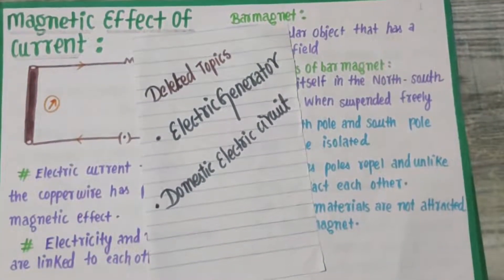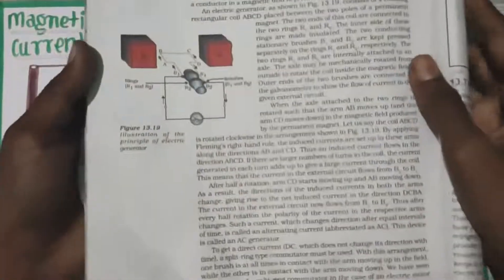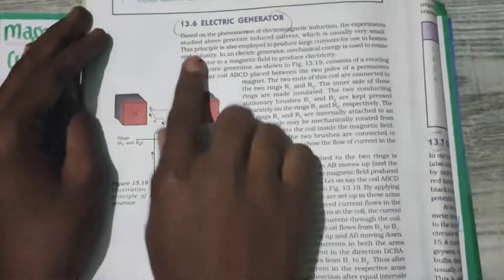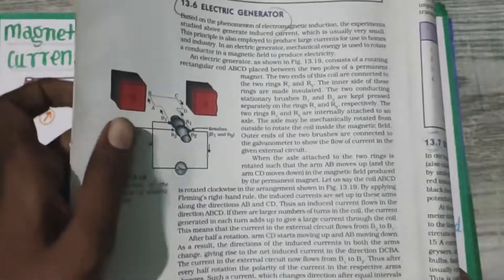So, here is page number 236. You can see this page is not there for your exam. This page will not be there for your exam. From electric generator, it's not going to be there for your exam.